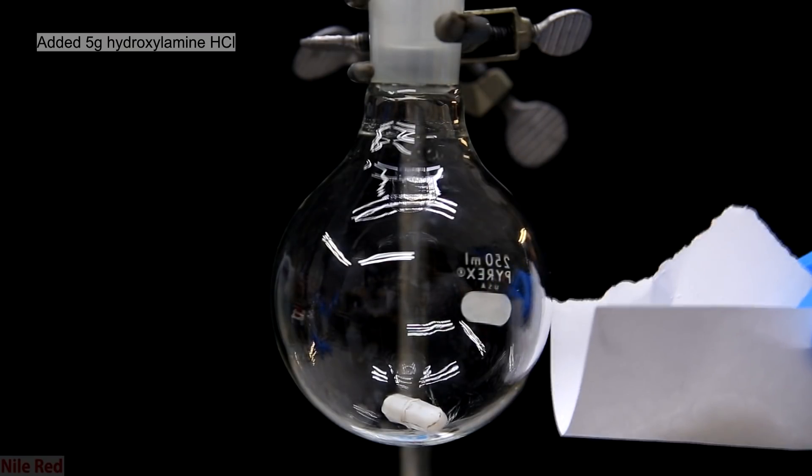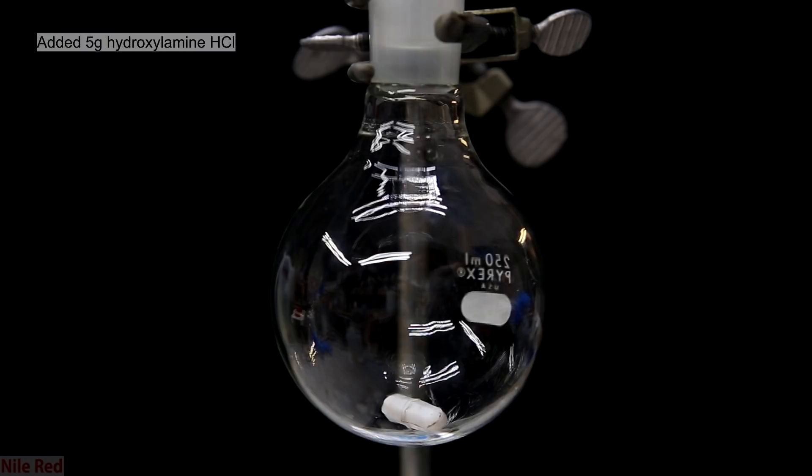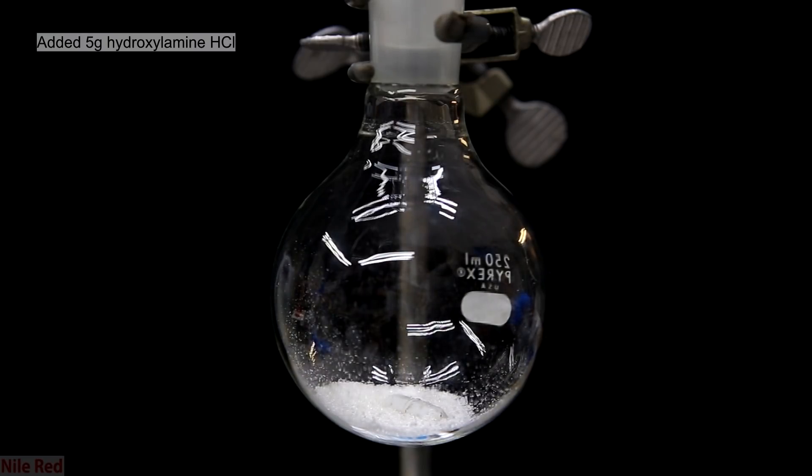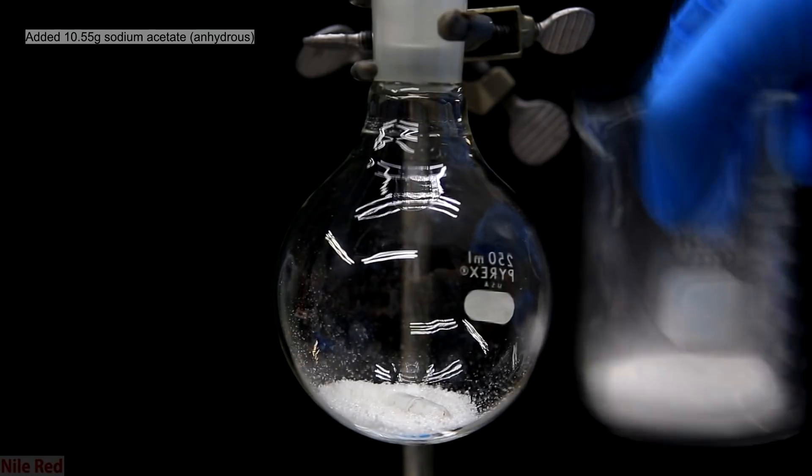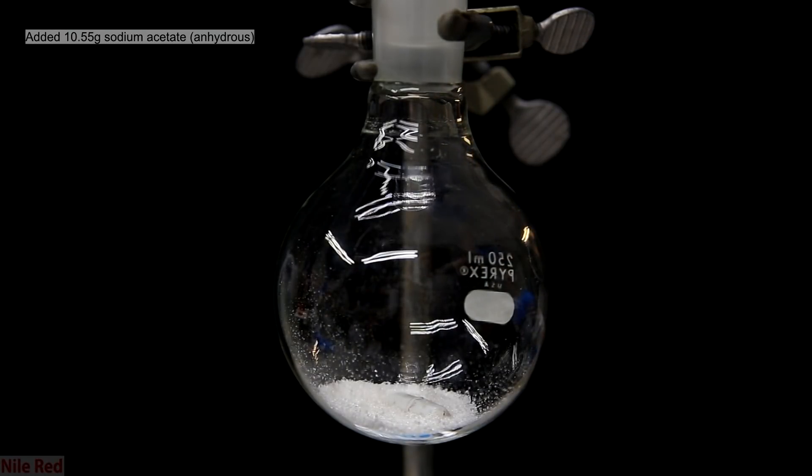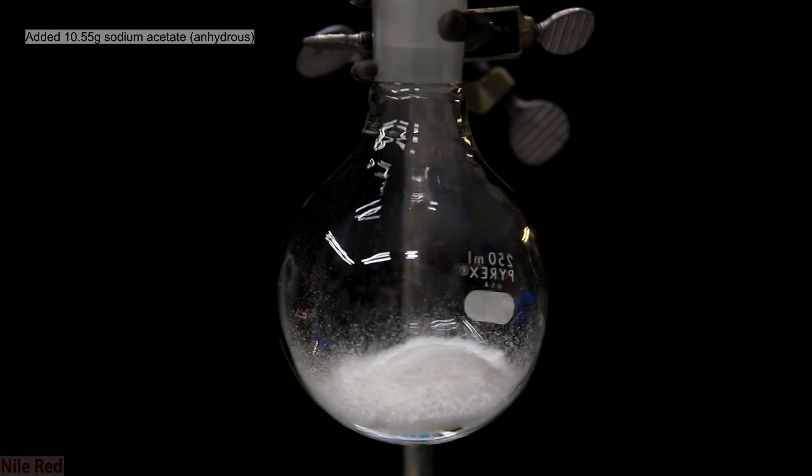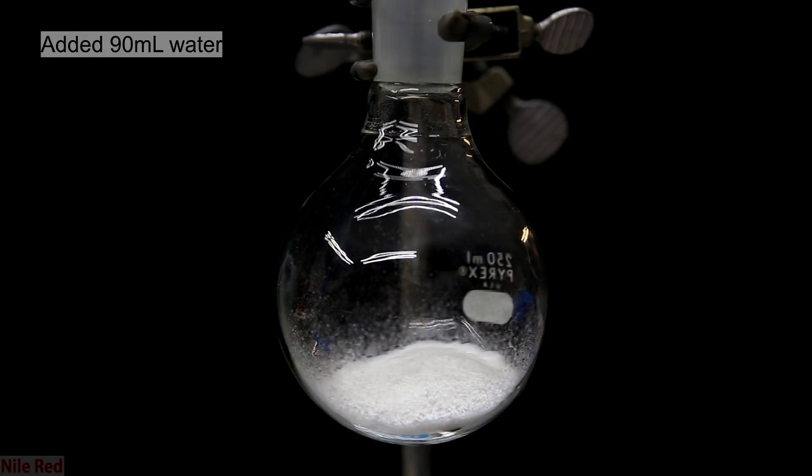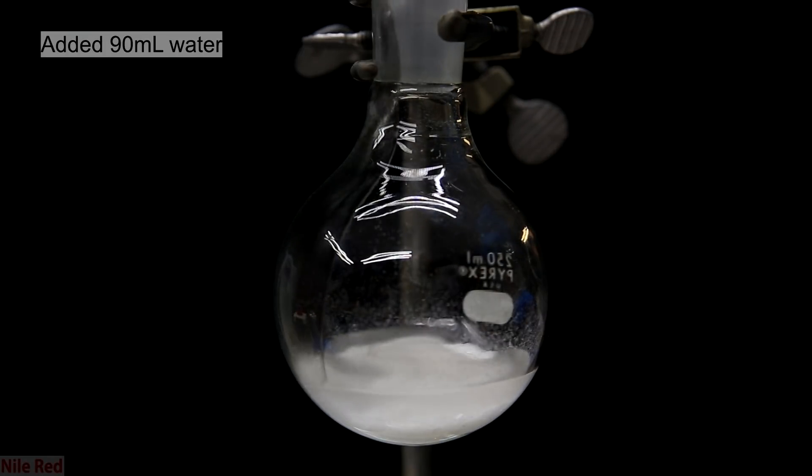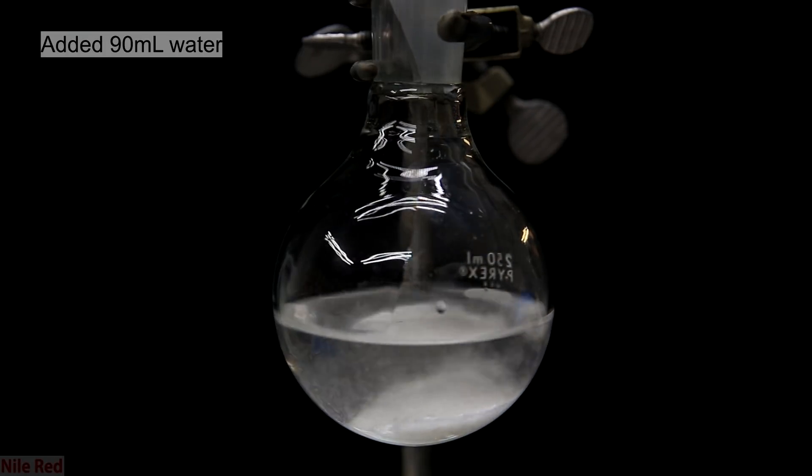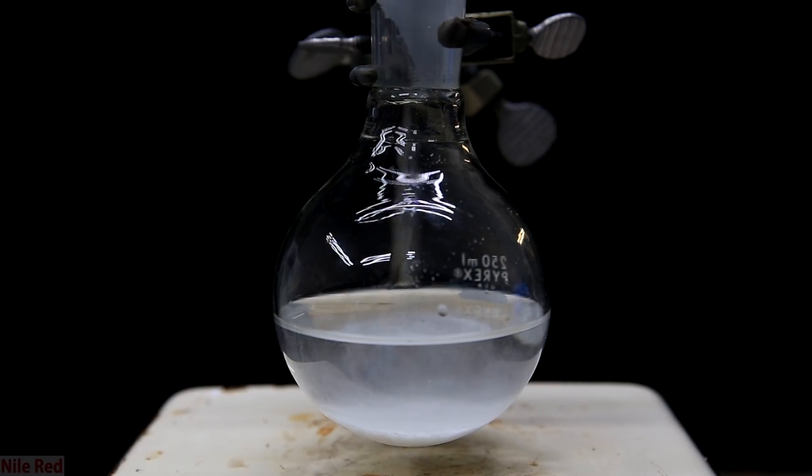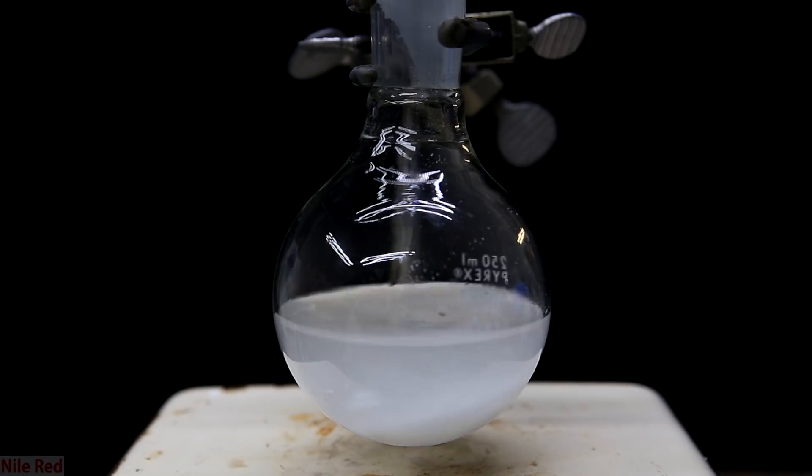The order of the addition really doesn't matter but I started out by adding the 5 grams of hydroxylamine hydrochloride. The next thing that I added was the 10.55 grams of anhydrous sodium acetate. On top of these two powders I poured in 90 milliliters of distilled water. I place a stirring plate below the round bottom flask and I add in a magnetic stirrer and then I stir until everything is dissolved.